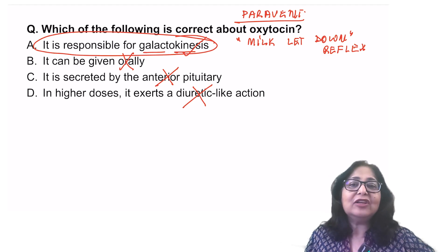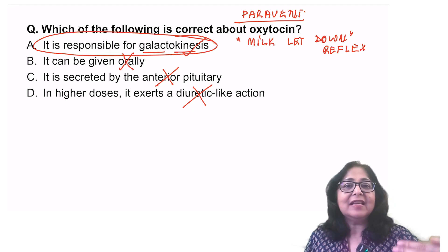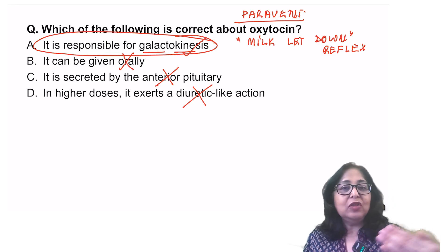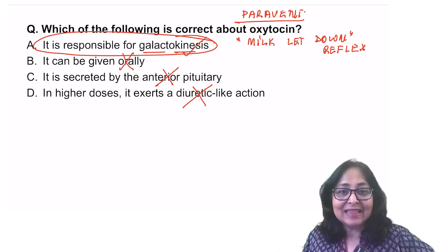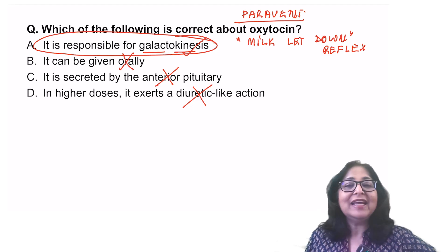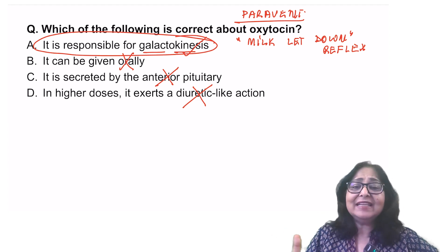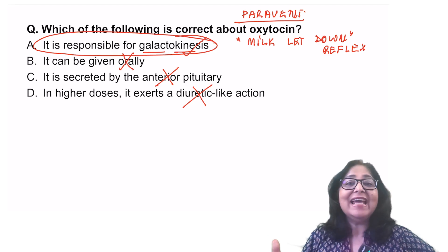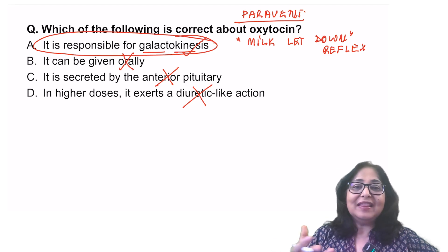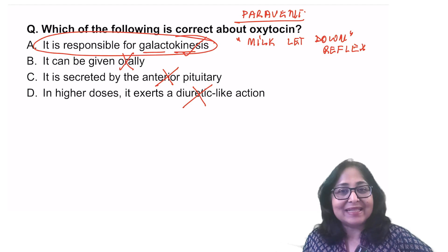There is another term which is called galactopoiesis, that is synthesis of milk. The hormone responsible for milk synthesis and therefore secretion is prolactin. Prolactin increases the synthesis of milk proteins, especially casein. So that is galactopoiesis.